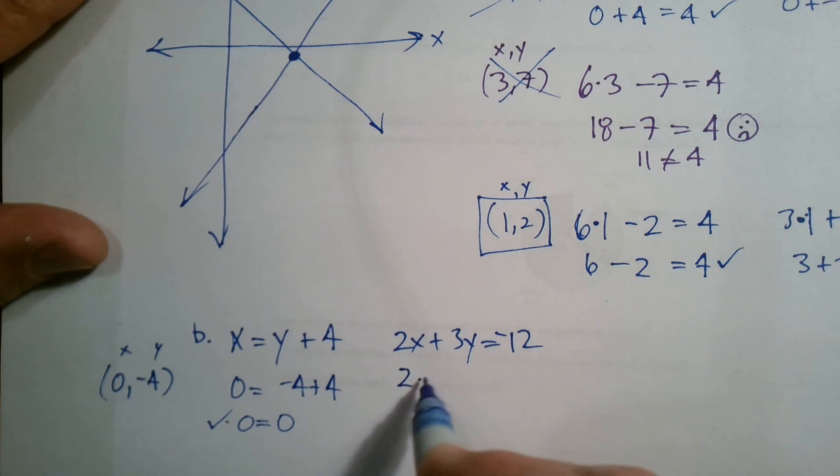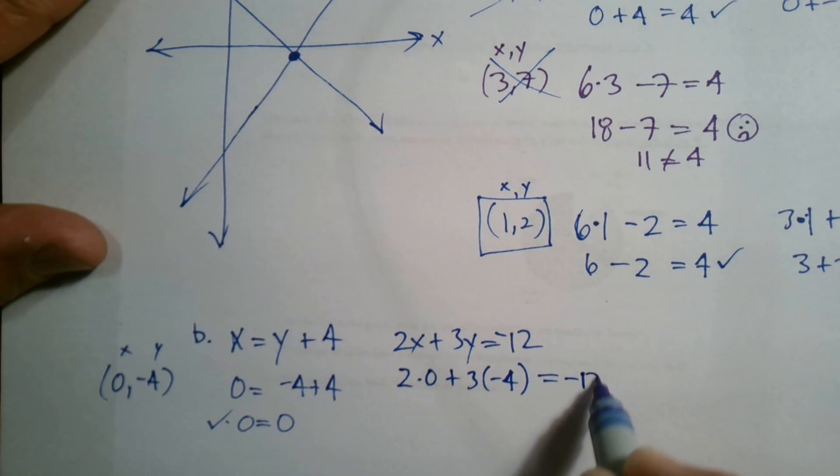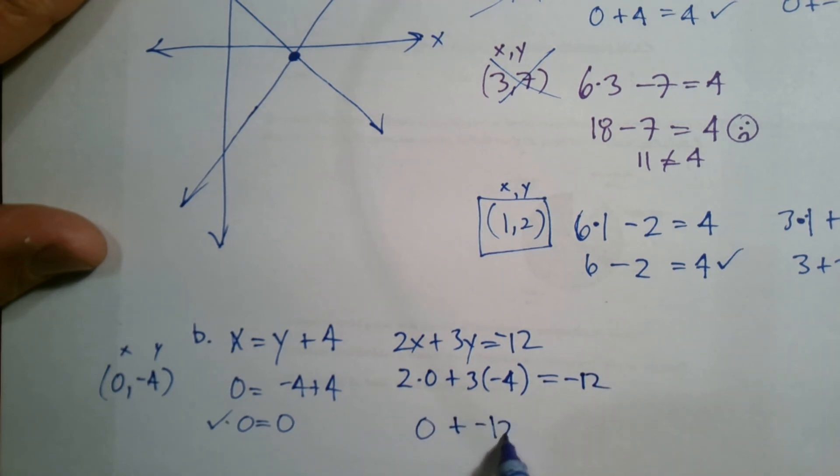So then let's try it over here. 2 times 0 plus 3 times negative 4, does it equal negative 12? So 2 times 0 is 0. 0 plus negative 12, does that equal negative 12? Sure does. Check. All right, sweet. So we ended up with the right one.